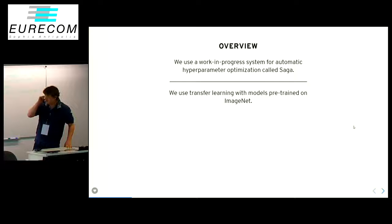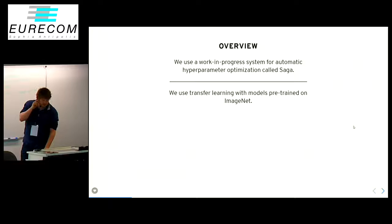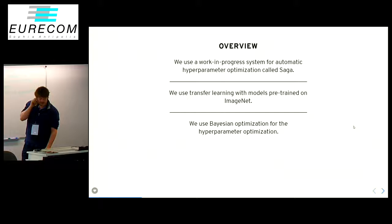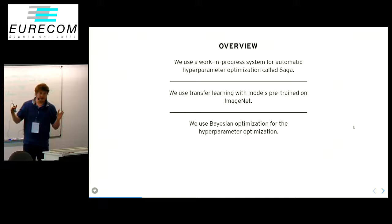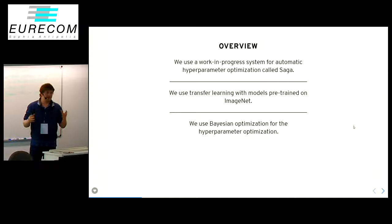We used transfer learning on ImageNet. We used something called Bayesian optimization for the hyperparameter optimization. This is a sequential optimization algorithm based on observations — the way it works is that you start with an arbitrary function and then make observations.